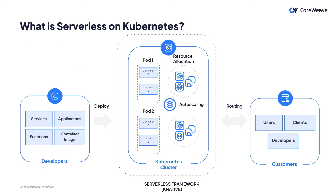So what is serverless on Kubernetes? Serverless on Kubernetes basically means you're able to deploy applications, services, and functions, wrap them up in a container, and deploy them on a Kubernetes cluster. In traditional software and infrastructure, you allocate or buy servers, test them, ensure they're reliable, and then deploy your applications onto these servers and account for scale.